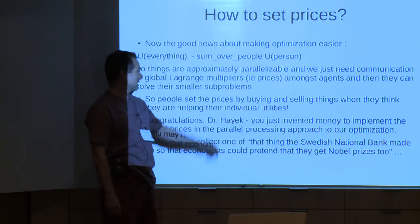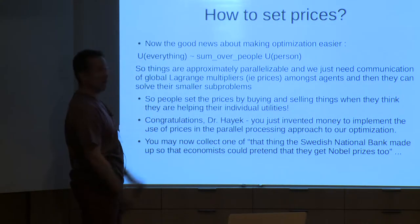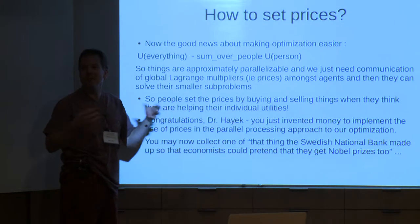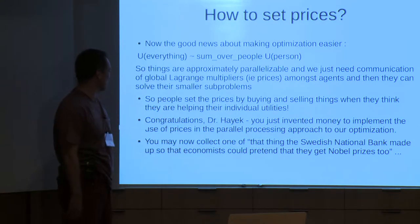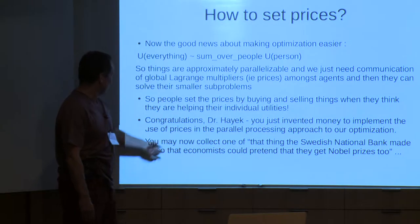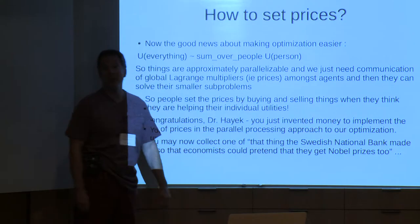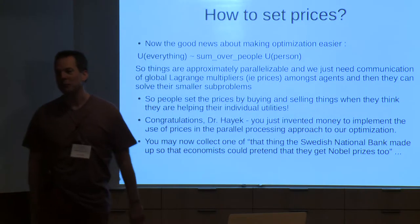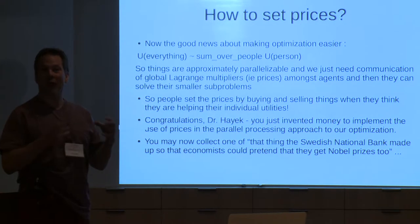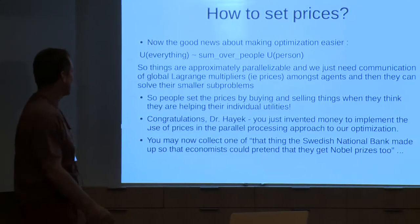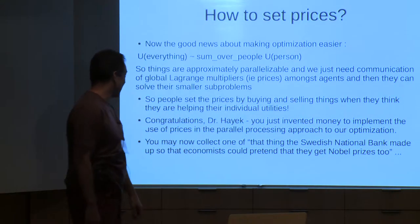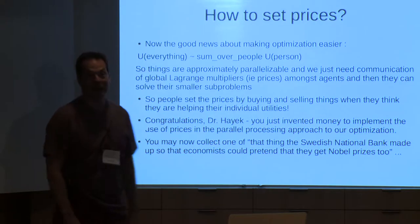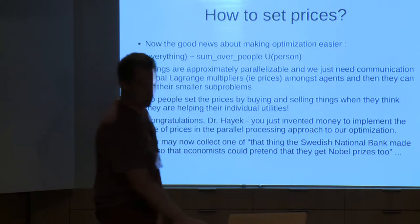Congratulations, Dr. Hayek — you just invented money, because how else do you implement the Lagrange multiplier, sharing the price information between people? They need to exchange money. Hayek is famous for being the first person to really point out the role of price information in resource allocation in an economy. For that he got one of those things the Swedish National Bank made up so that economists could pretend they have Nobel Prizes too.